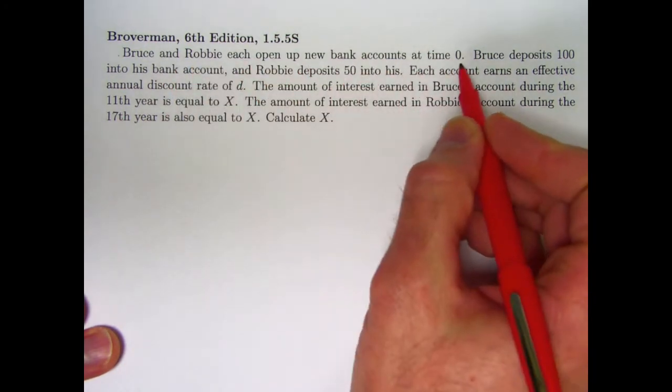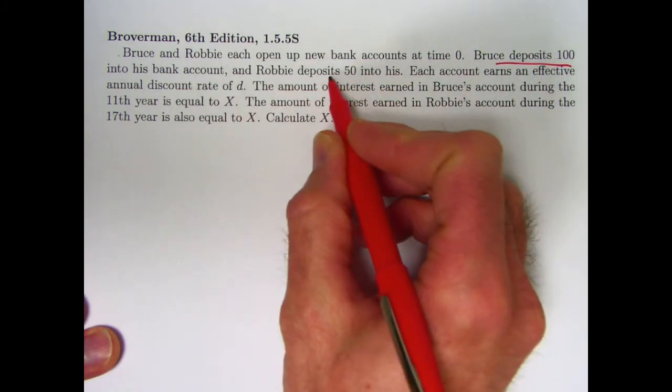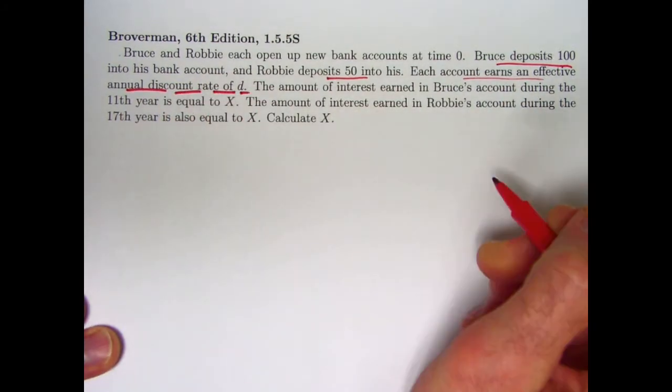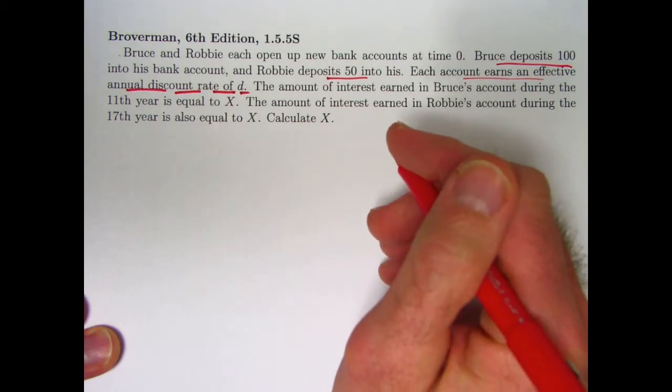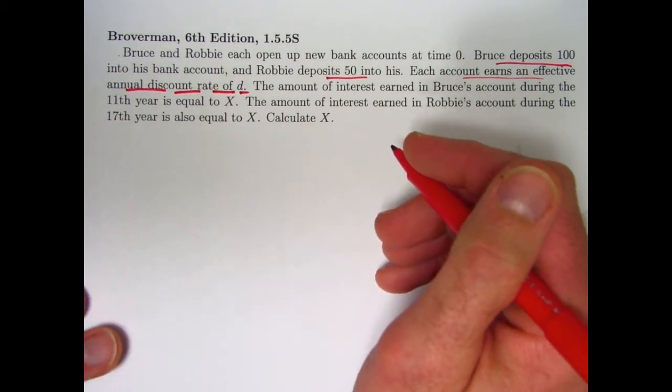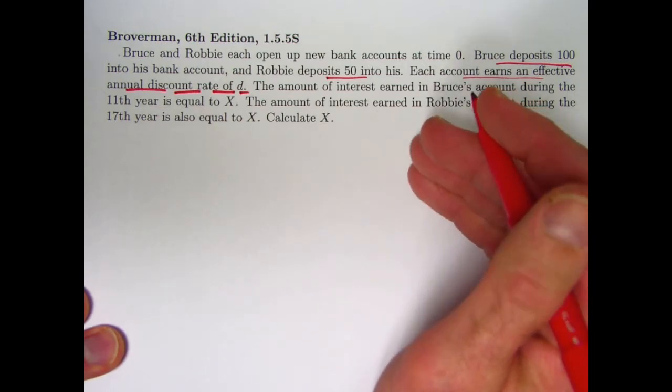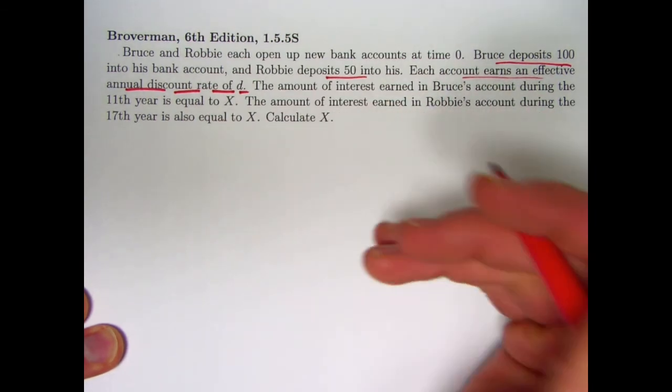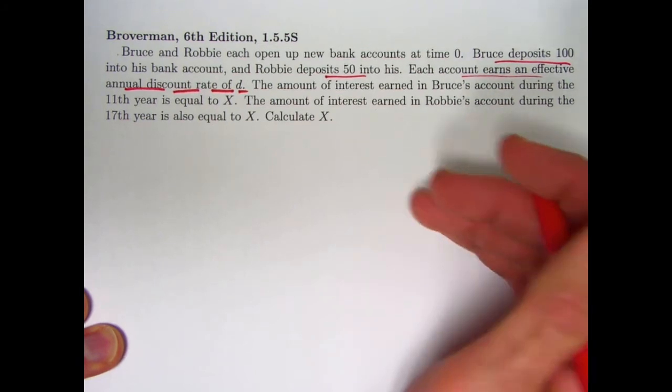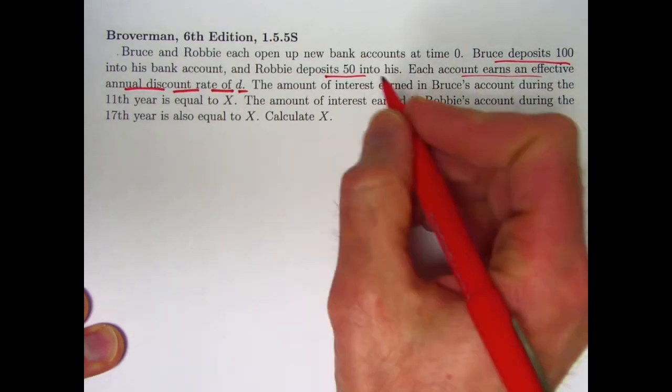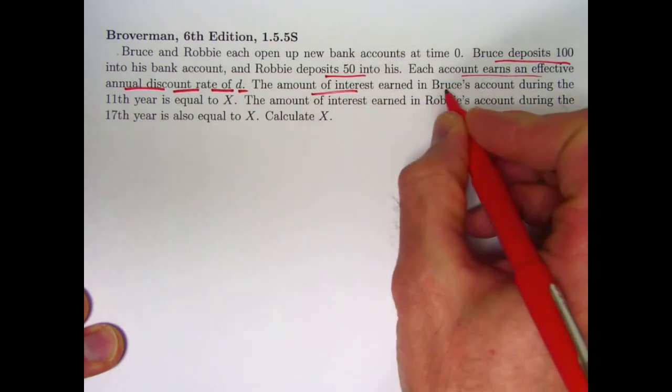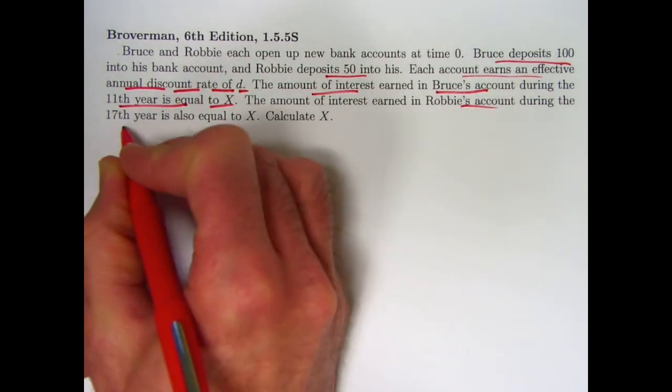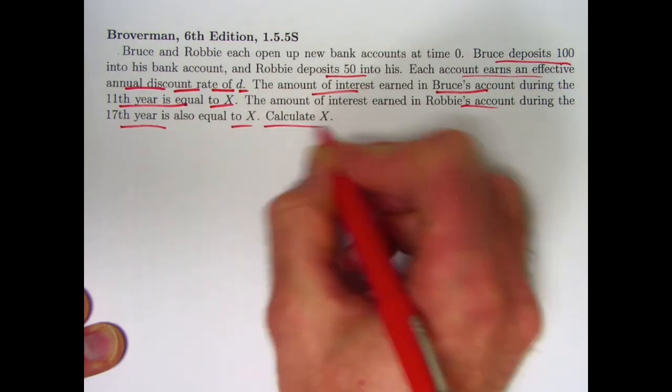Bruce and Robbie each open new bank accounts at time 0. Bruce deposits 100 and Robbie deposits 50. Each earns an effective annual discount rate of D. We're going to put off exactly what D means, though right now I will tell you if the effective annual discount rate is the same, that also means the effective annual interest rate is the same. So I'm going to solve this problem in terms of the effective annual rate of interest, i, first, and then we'll talk about what D means. So it'll introduce the idea of what an effective annual discount rate is. The amount of interest earned in Bruce's account during the 11th year is equal to x, and also that's the same as Robbie's account during the 17th year. The goal ultimately is to calculate x.